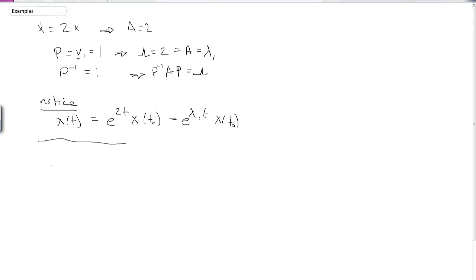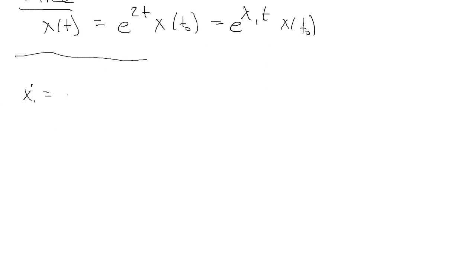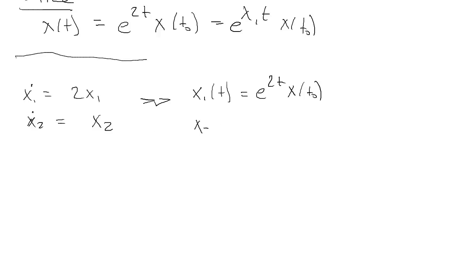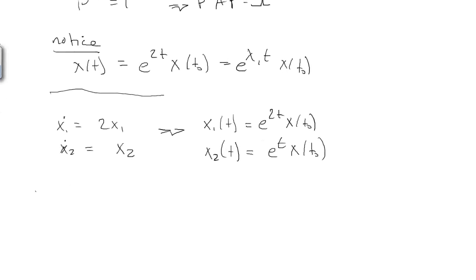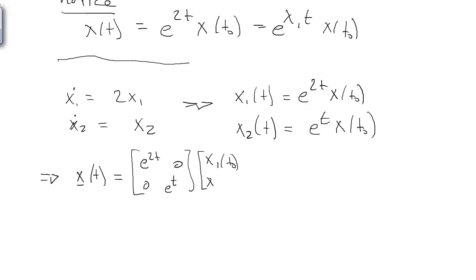For something more complicated, say x1-dot equals 2x1 and x2-dot equals x2 — an uncoupled set of differential equations — we can write x1(t) equals e to the 2t times x1 at t-naught, and x2(t) equals e to the t times x2 at t-naught. In state form, x(t) equals the matrix [e^(2t), 0; 0, e^t] times the initial conditions [x1(t₀); x2(t₀)].